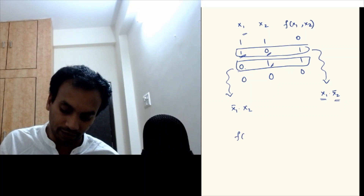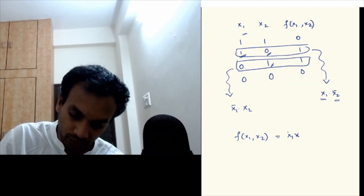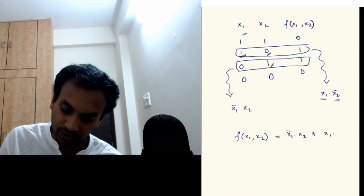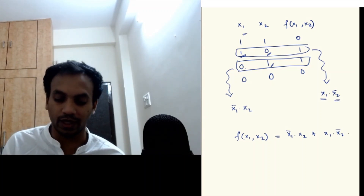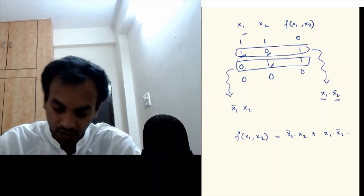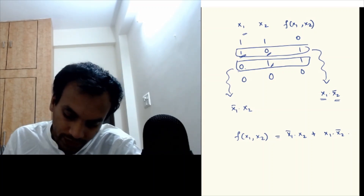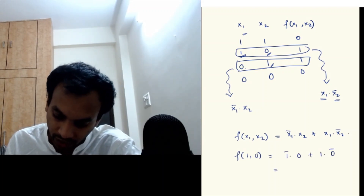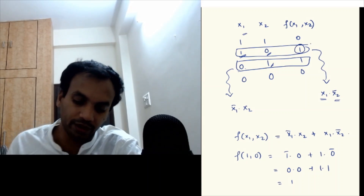So these two are the min terms. I can write the function f(x1, x2) as the sum of min terms: x1 bar times x2 plus x1 times x2 bar. This function perfectly represents the truth table. For instance, if you put the values 1, 0 in place of x1 and x2, you get f(1,0) = 1 bar times 0 plus 1 times 0 bar, which is 0 times 0 plus 1 times 1, which equals 1 — recovering the correct value.